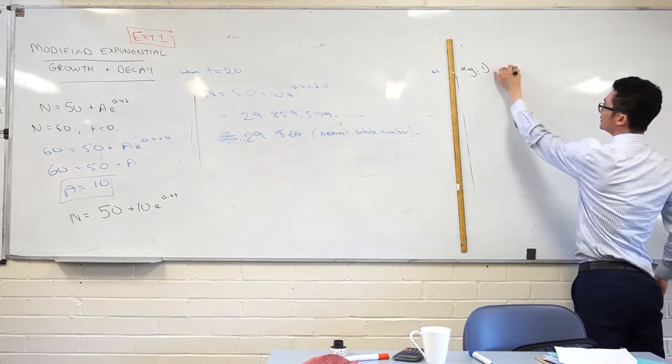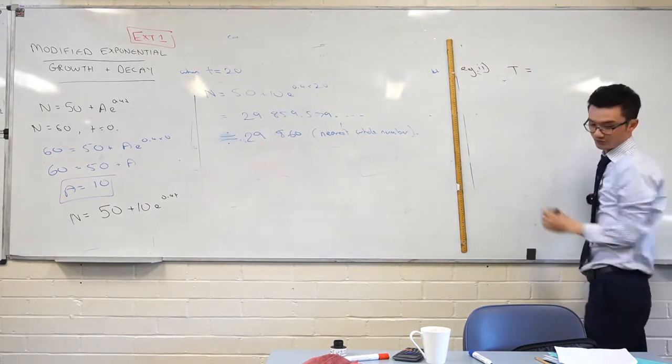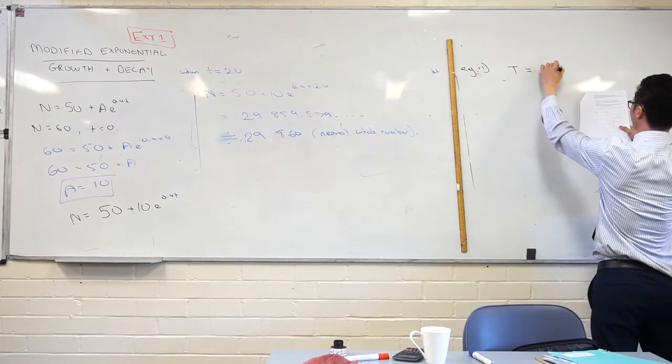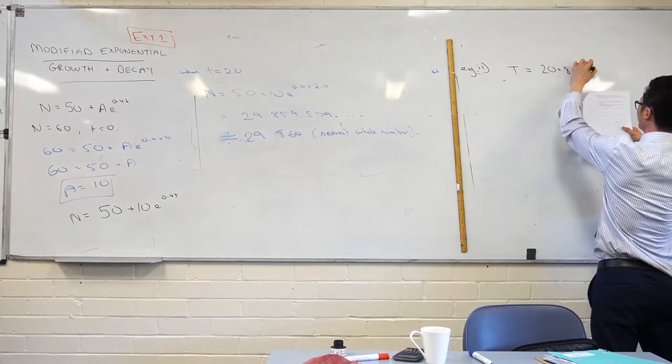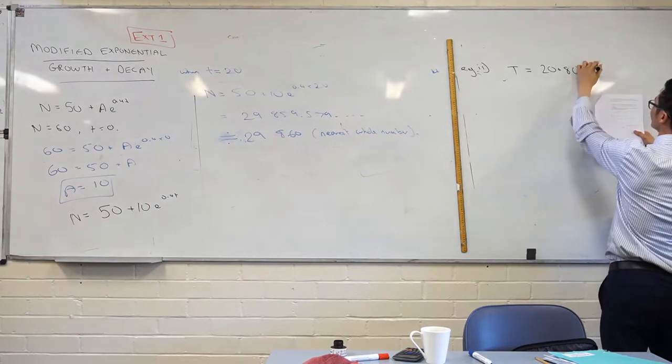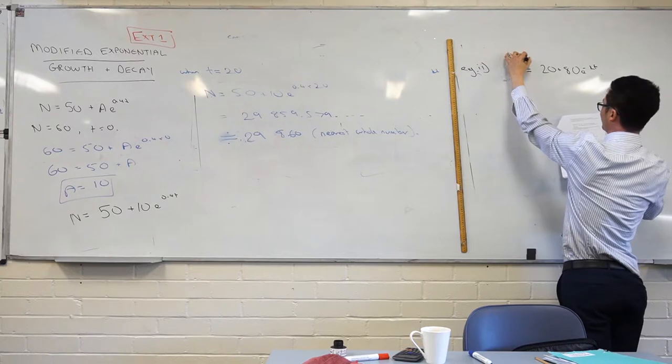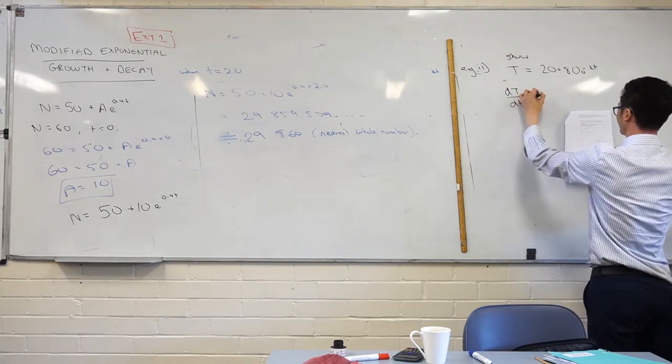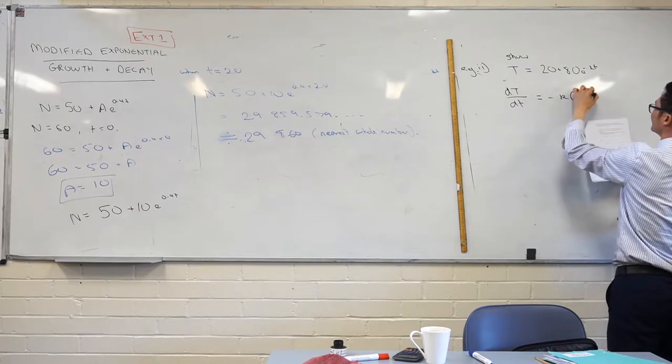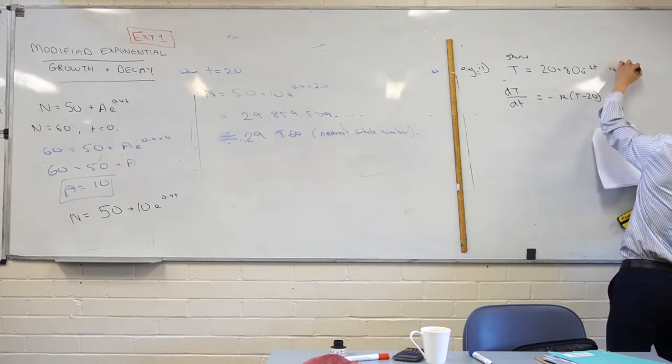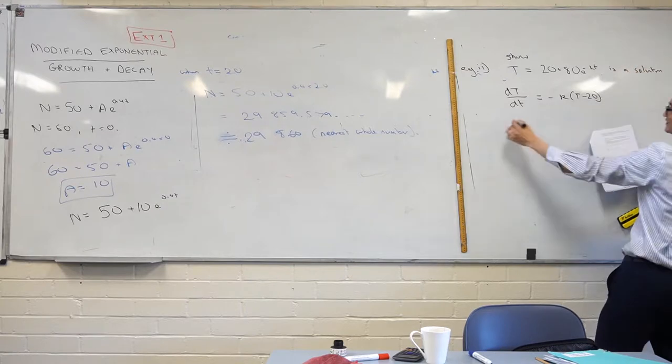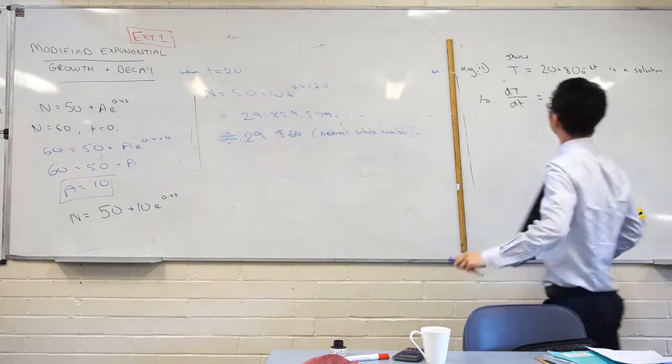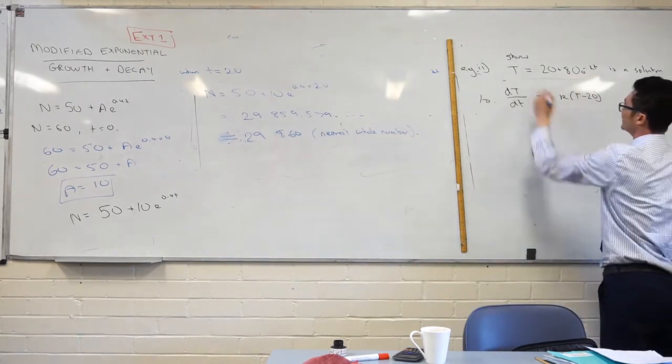And again they give us, as example 2, t is equal to 20 plus 80e to the minus kt. I want to show that this is a solution to this. A lot of t is going in here. So how am I going to show that something is a solution? We're thinking about derivatives, right? So I have this expression here, let's take its derivative.